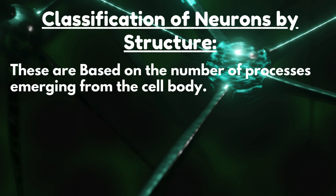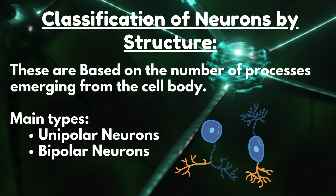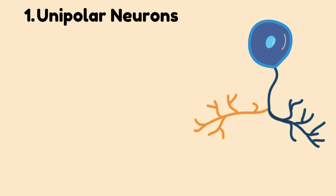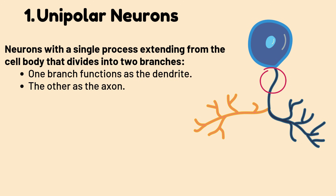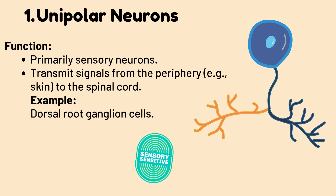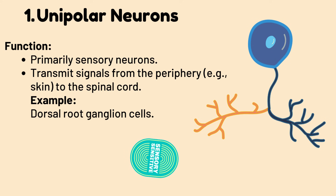There are three main types: unipolar, bipolar, and multipolar neurons. Number one: unipolar neurons — neurons with a single process extending from the cell body that divides into two branches. One branch functions as the dendrite, the other as the axon. They are found in sensory ganglia of the peripheral nervous system.